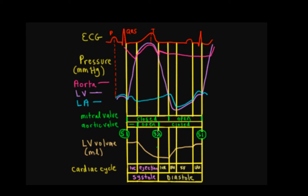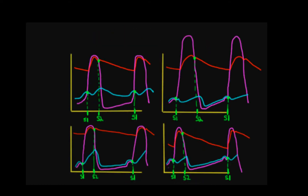Remember, between S1 and S2 is systole, and between S2 and S1 is diastole. Now we're going to look at some pressure versus time graphs for different types of murmurs. The pressures are labeled in different colors: ventricular pressure in magenta, atrial pressure in turquoise, and great artery pressure in strawberry. We also have the valvular closure sounds S1 and S2 labeled.